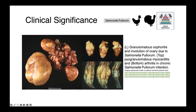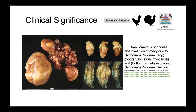While we don't have salmonella pallorum in Canada, we do have other serotypes. These organisms are spread by fecal-oral transmission — through direct contact between a carrier animal and uninfected susceptible, or through the litter, fluff, or water. The highest losses are typically in young birds less than two weeks old, who die through septicemia. In this image, you can see a cytological preparation from the liver of a bird with salmonella septicemia, with organisms surrounding the hepatocytes.